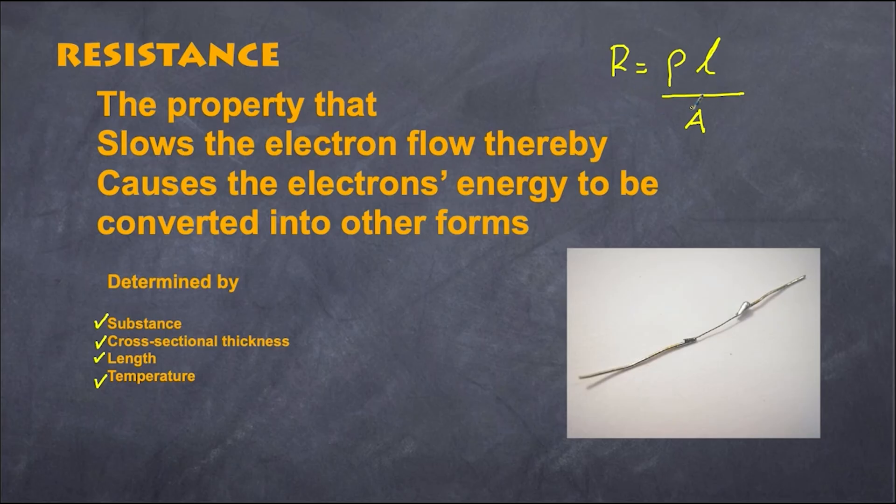In other words, if a current starts to flow through a wire and heats the wire up because there's already some resistance, the fact that it's increasing in temperature actually increases its resistance. That will be a factor we'll look at later when we talk about ohmic and non-ohmic resistors.